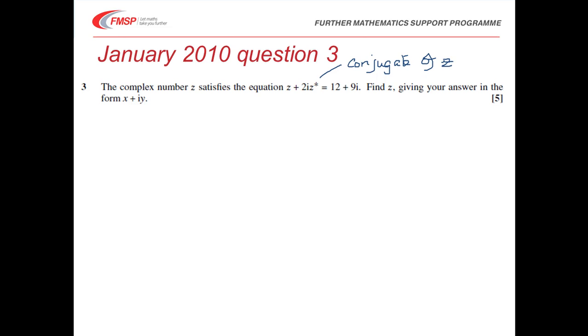Then if z plus 2i conjugate z is equal to 12 plus 9i, then we're asked to find z, giving our answer in the form x plus iy. So let's just assume that z is equal to x plus iy. Then that means that this conjugate will be equal to x minus iy. So that's how we define the conjugate.